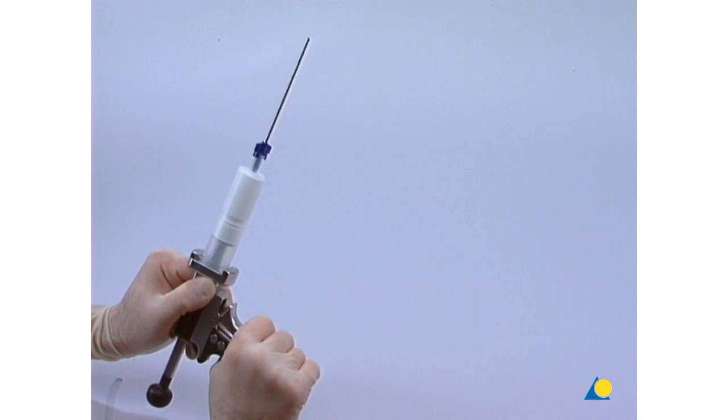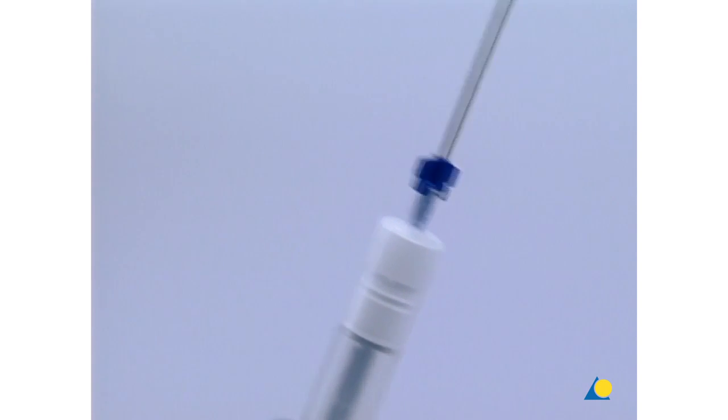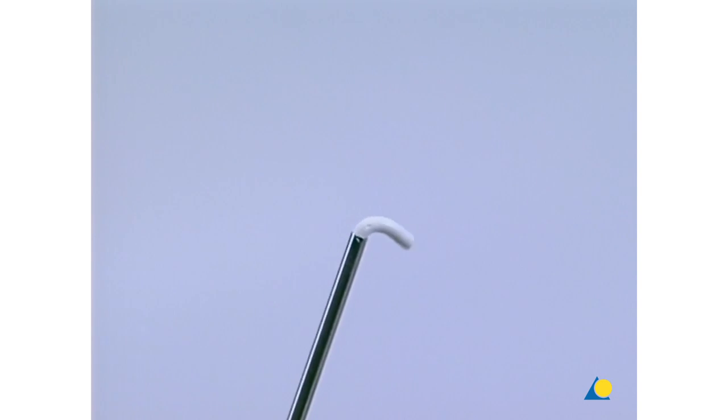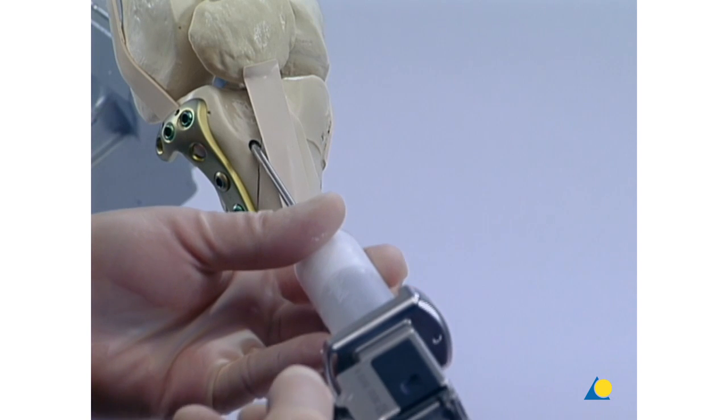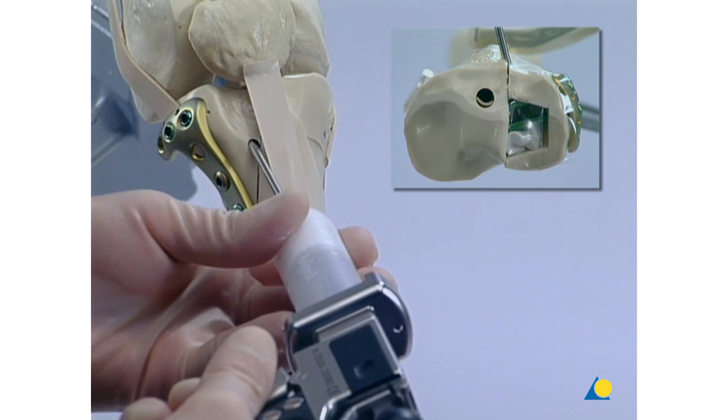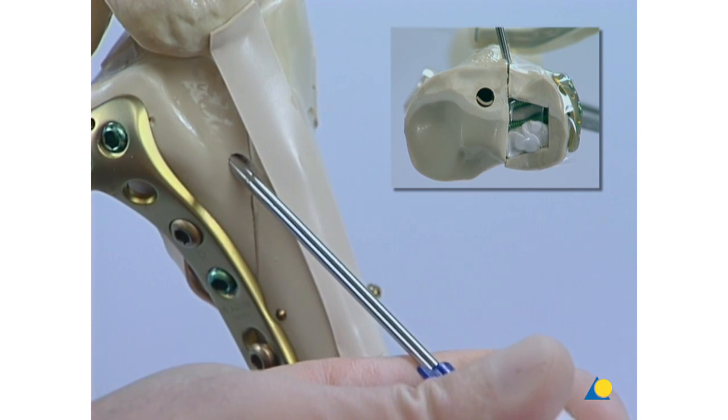When the delivery gun is held upright, the remaining air is expelled from the cartridge by gently squeezing the trigger several times. The cannula is inserted into the defect and the defect is filled by squeezing the trigger slowly and steadily. Excessive pressure is avoided.